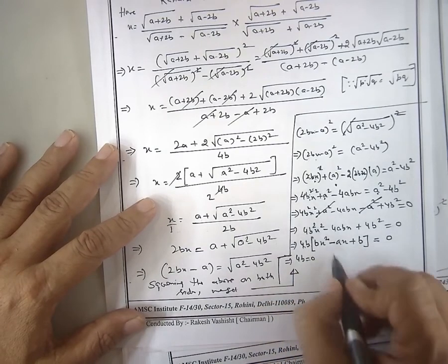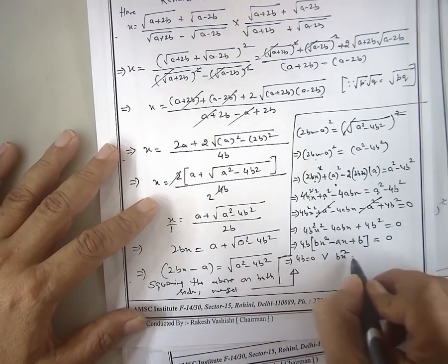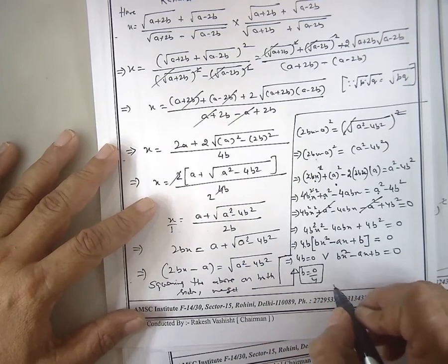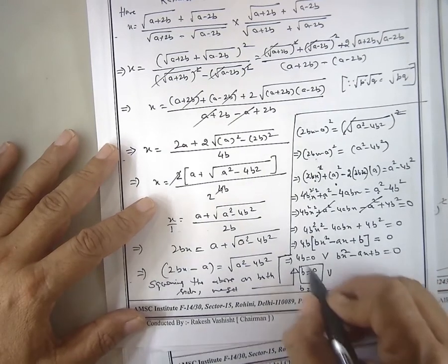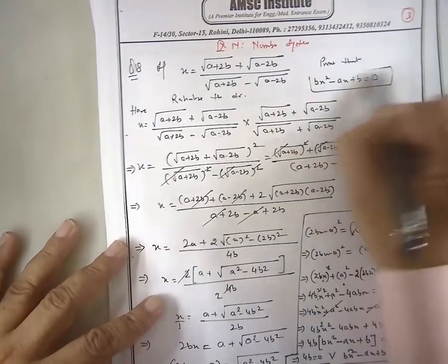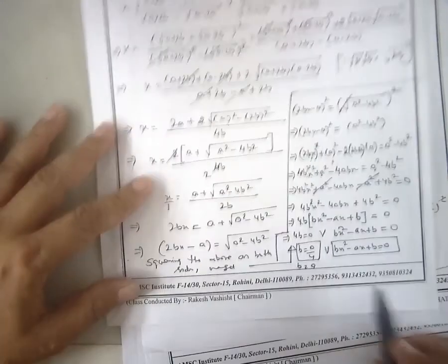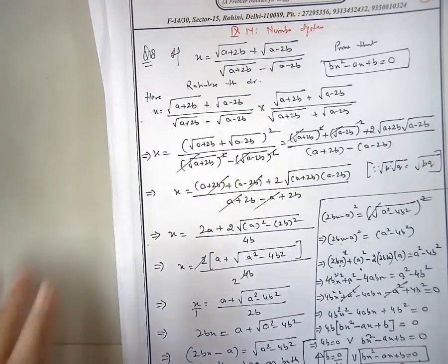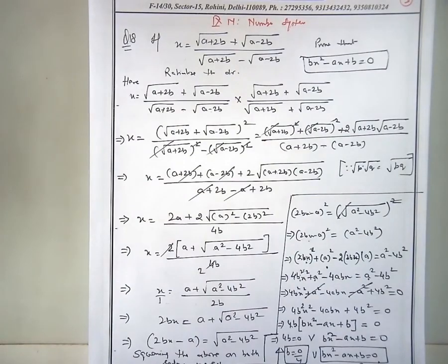So we get bx squared minus x plus b. This is the question type you'll see in exams in the number system chapter. Have you seen questions like this in NCERT? Number system is very elaborate. I tell you one thing: each of you will have to practice. Take only 15 minutes rest once you reach home, then immediately sit and work through the book. The class questions I cover, you must solve them.